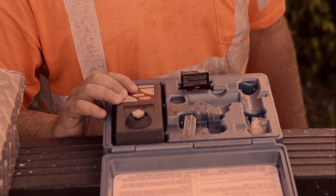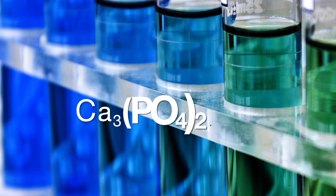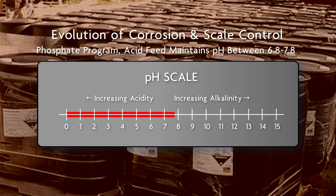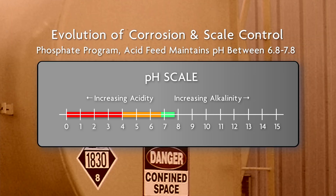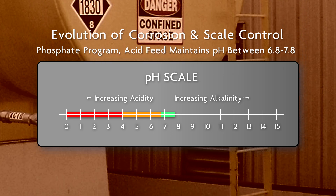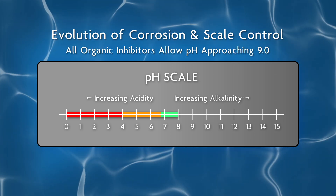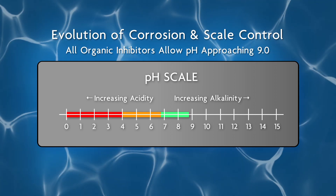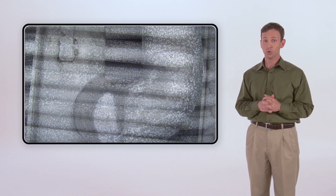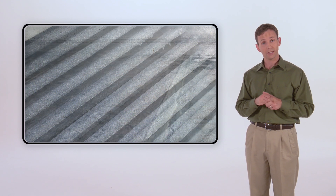In response, the water treatment industry initially transitioned to stabilized phosphate programs. To avoid calcium phosphate deposition inside systems, acid was typically fed to maintain pH between 6.8 and 7.8. Customers' safety concerns created a desire to eliminate the ongoing feed of sulfuric acid to control evaporative cooling water's pH. This led to further advances in corrosion and scale control, which resulted in all-organic inhibitors that could operate with water pHs approaching 9.0. As the organic chemistries capable of operating at higher pH ranges grew in popularity, reports of premature corrosion of the protective zinc layer, known as white rust, became more prevalent.